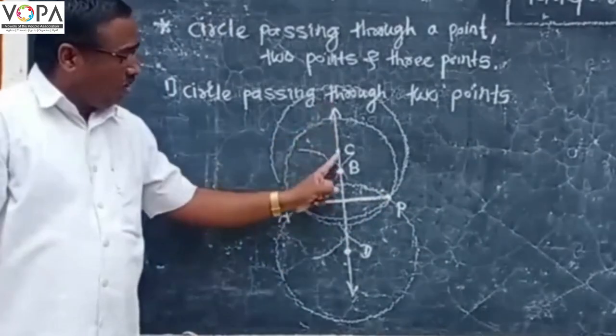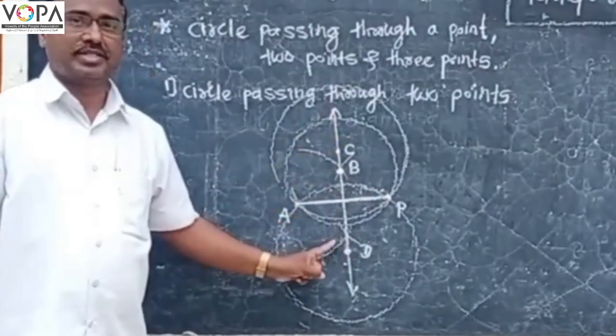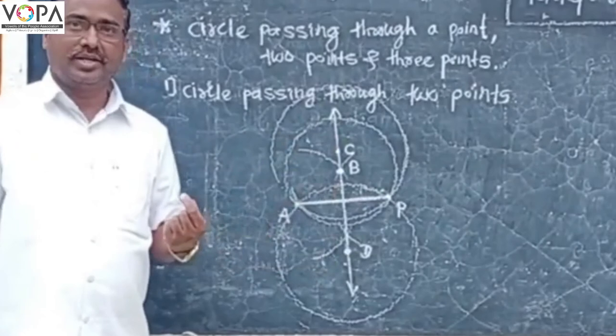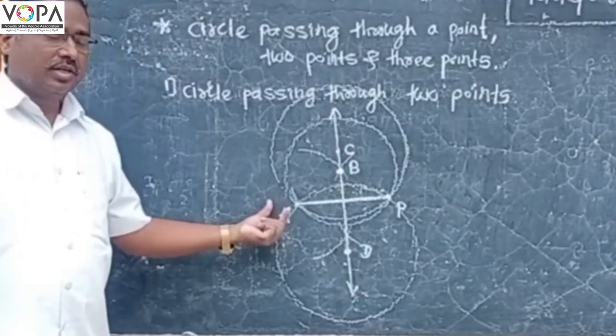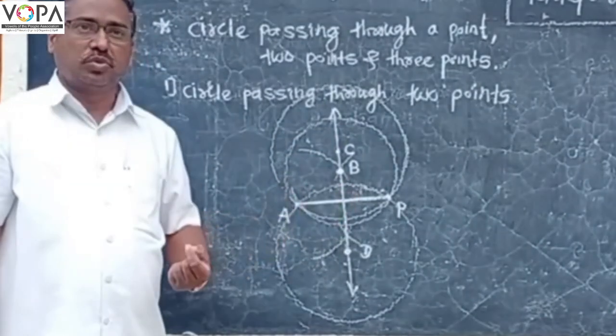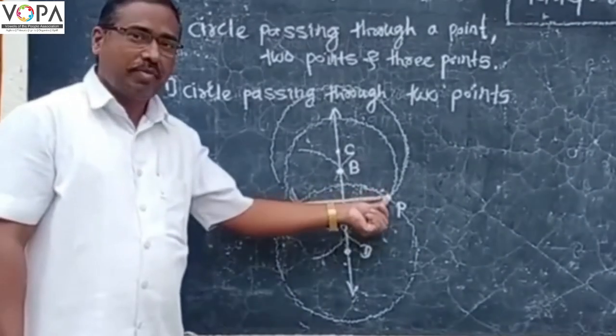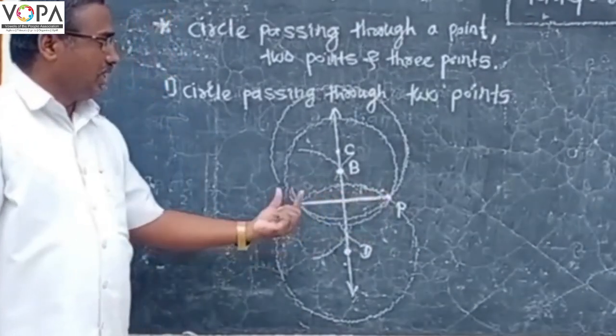There are infinite points on the perpendicular bisector. Hence, we can say that an infinite number of circles can pass through the given points A and P.